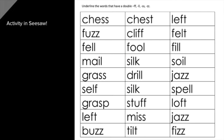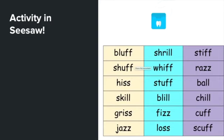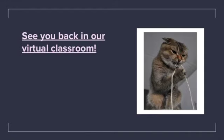For our activities in Seesaw, there are a few activities to choose from. One is where you underline and read the words that have the double F, L, S, or Z — it's kind of a floss word hunt. There is also a straight reading of floss words, some nonsense and some real. I also wrote a few different paragraphs to read and some matching activities. So I look forward to seeing your work there, and so does Miss Ebony. And here's a cat flossing — so cute!